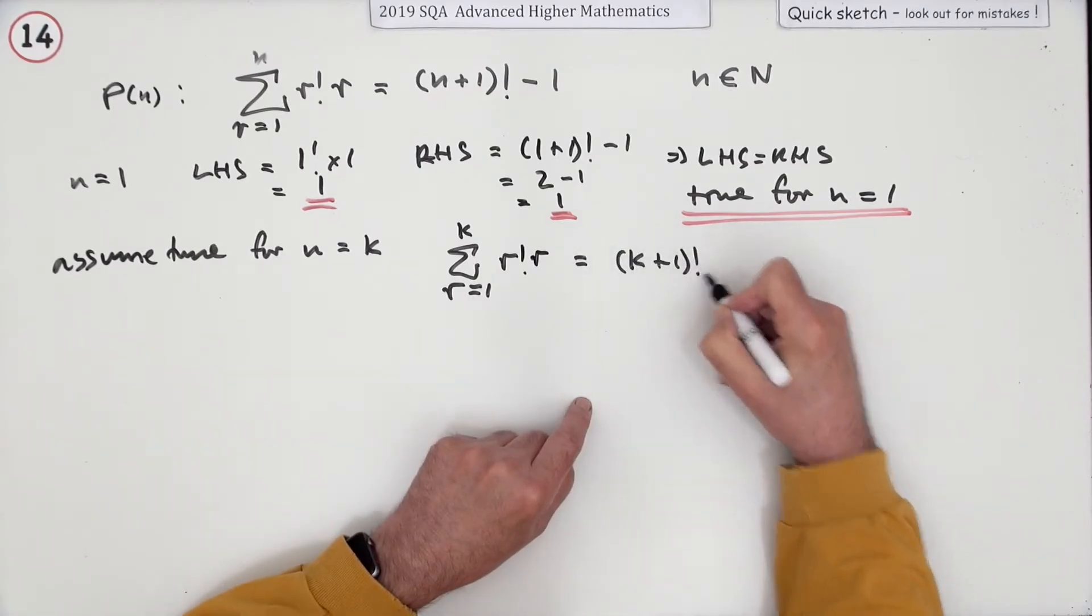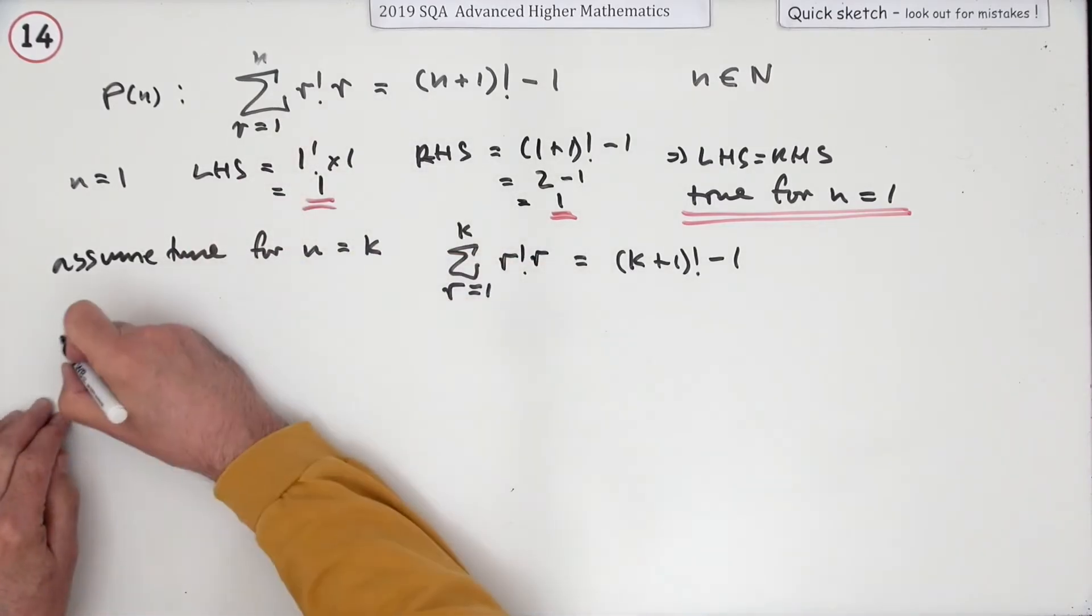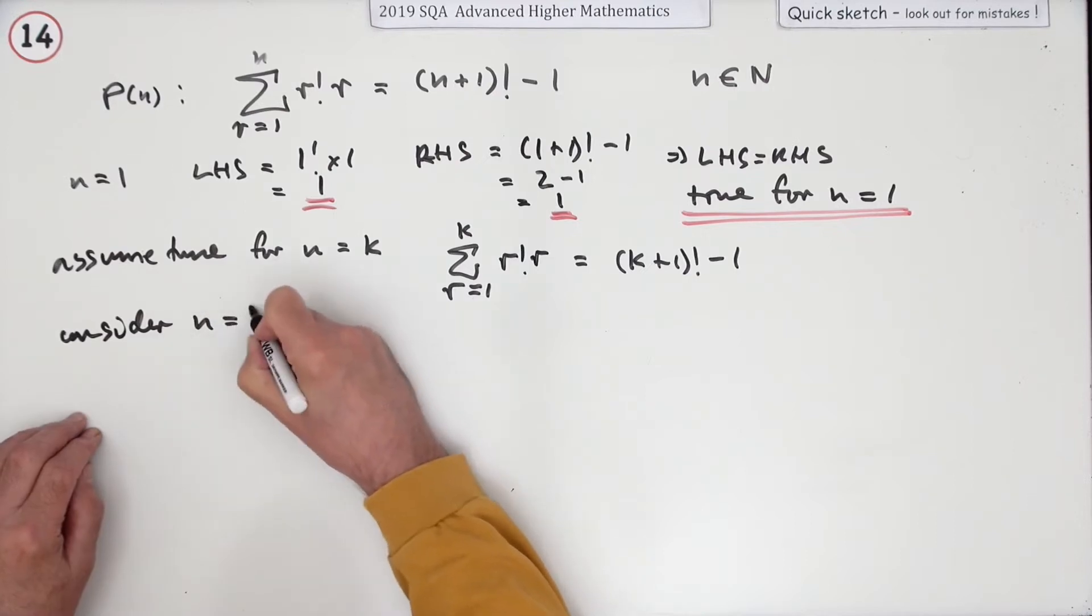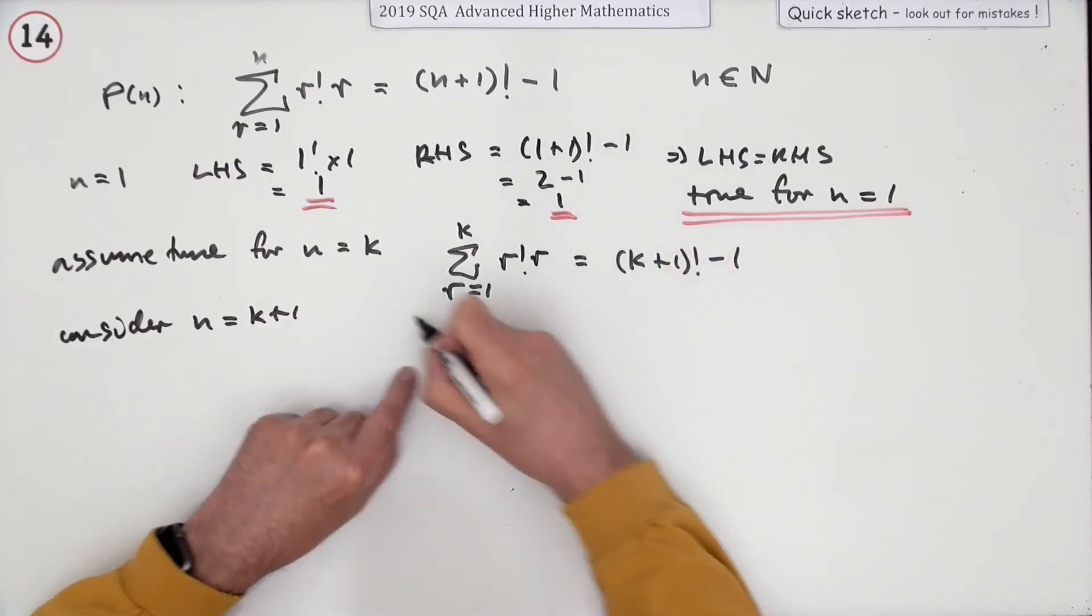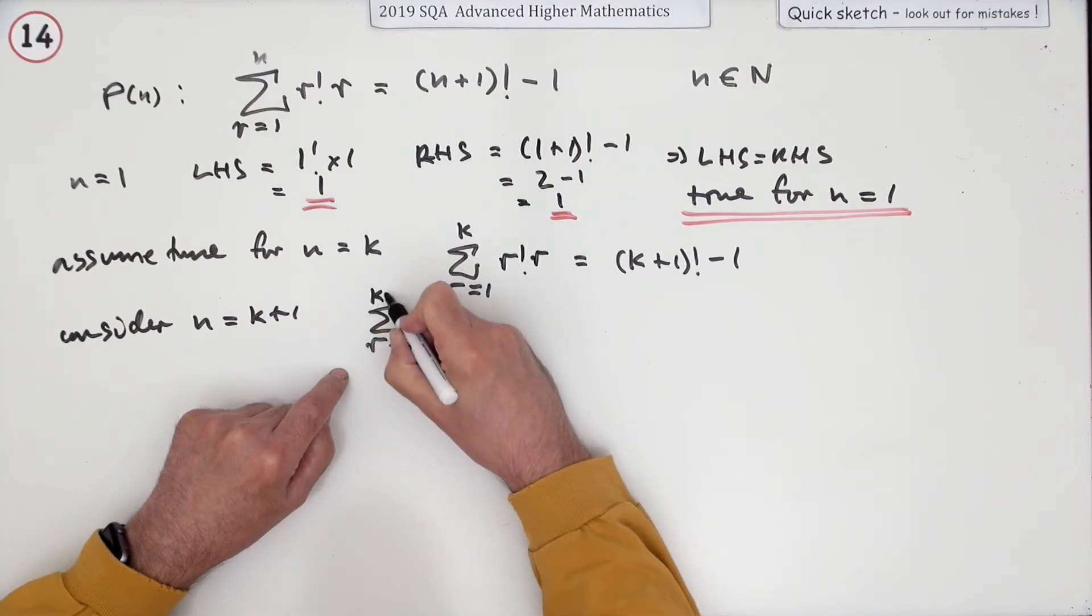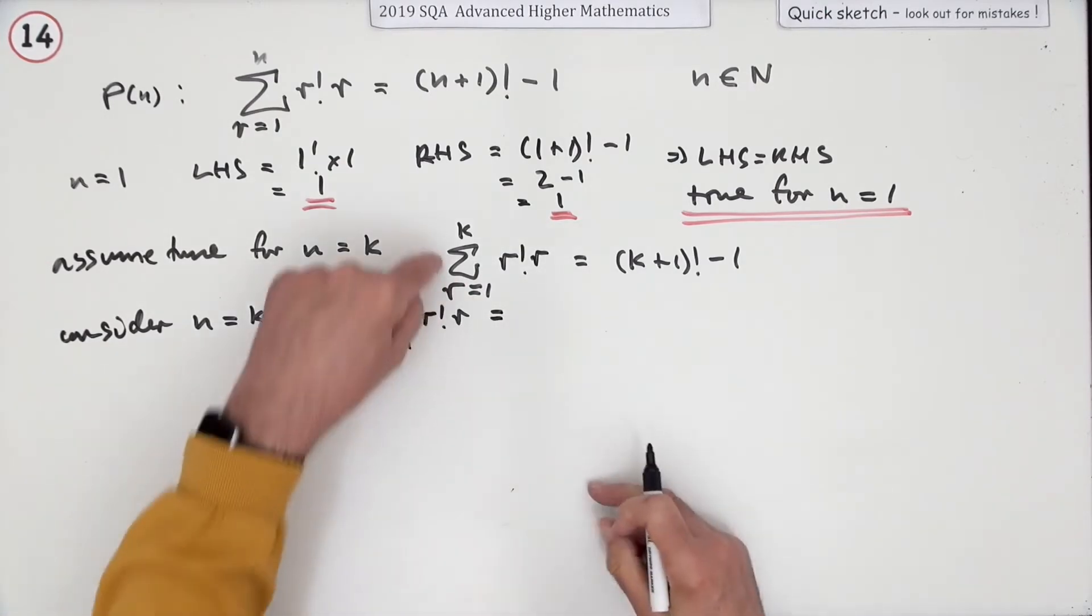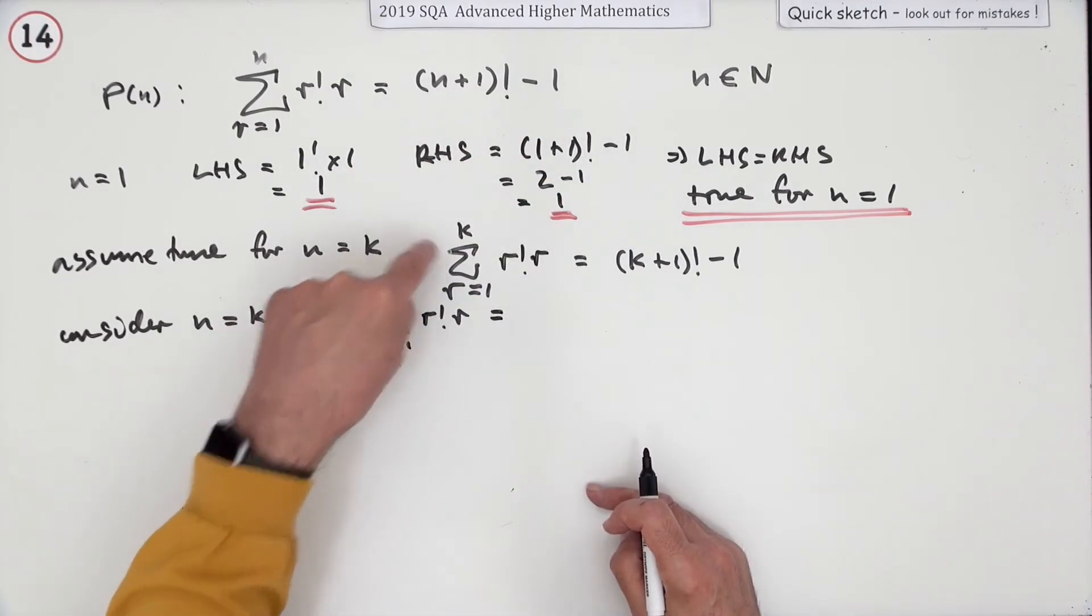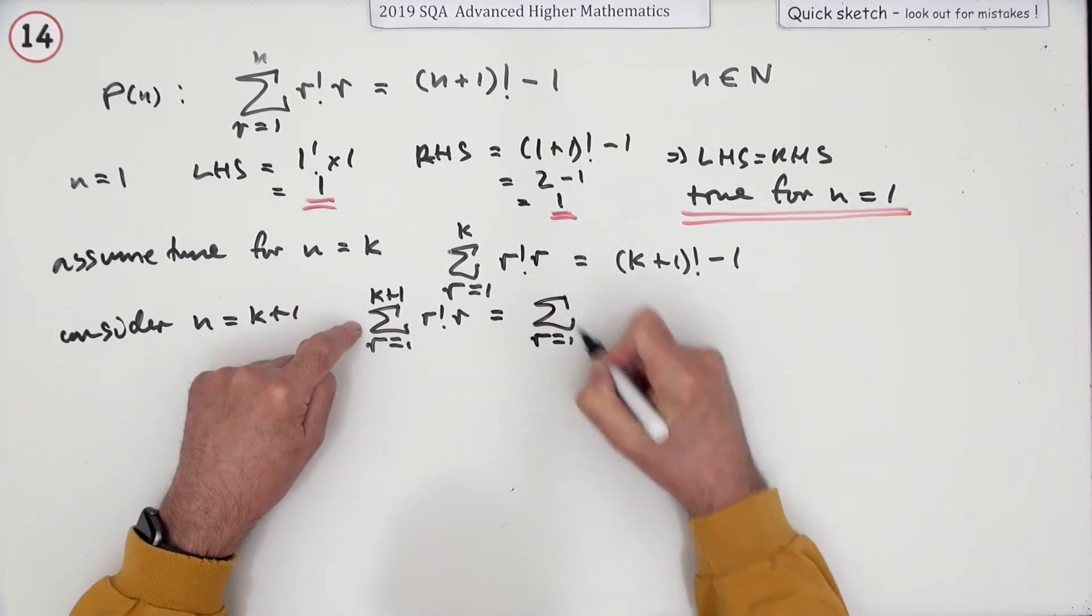Now what would happen for the next step? So consider the case where you've gone one step beyond k+1. Well, in that case you're going to have the summation from r=1 to k+1. Well, you know with summations they just keep adding extra terms. The only difference between these two is I've added one extra term. That will just be the same as the summation up to k plus the extra term.